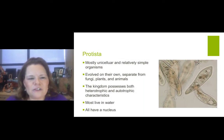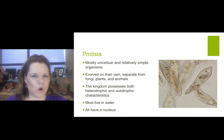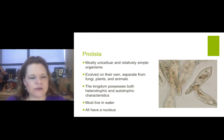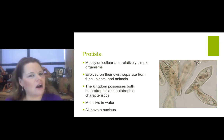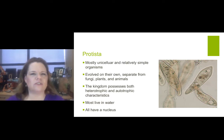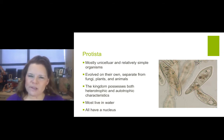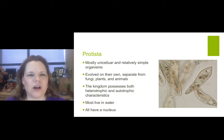Protista: mostly unicellular and relatively simple organisms that evolved on their own — separate from fungi, plants, and animals — and are very unique. This kingdom possesses both heterotrophic and autotrophic characteristics. It's probably the most unique of all in terms of its ability to survive. They mostly live in water and all have a nucleus.